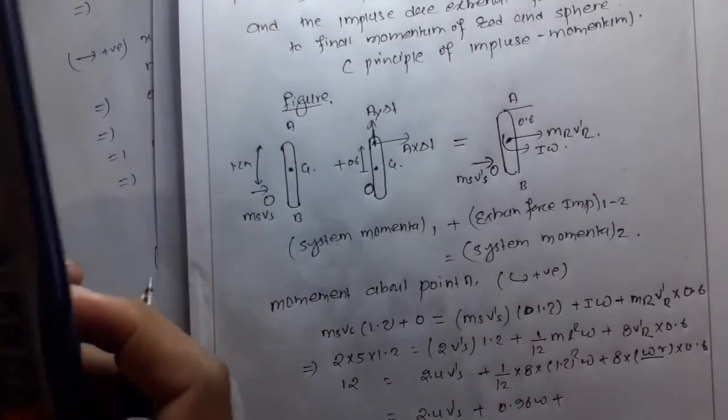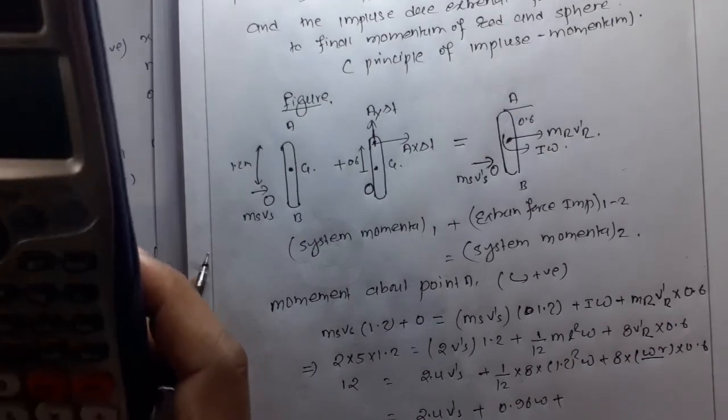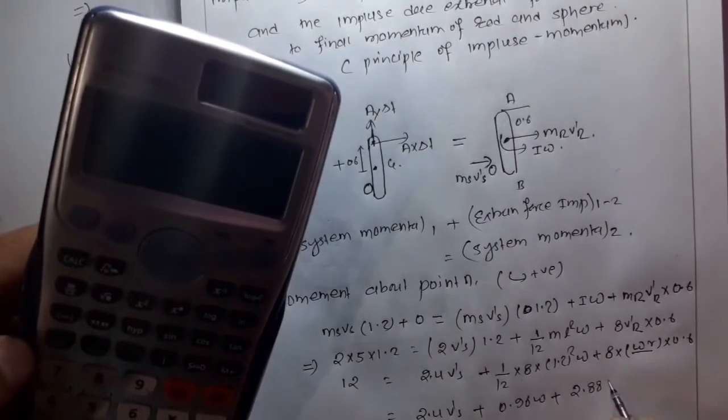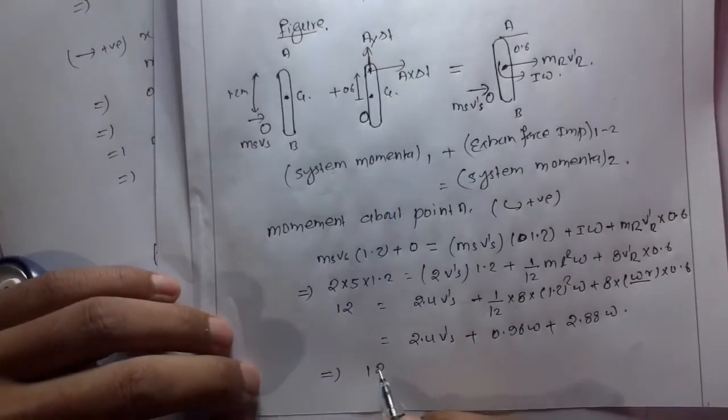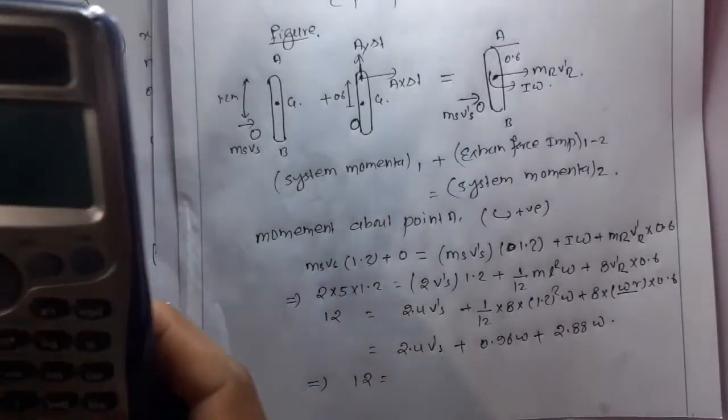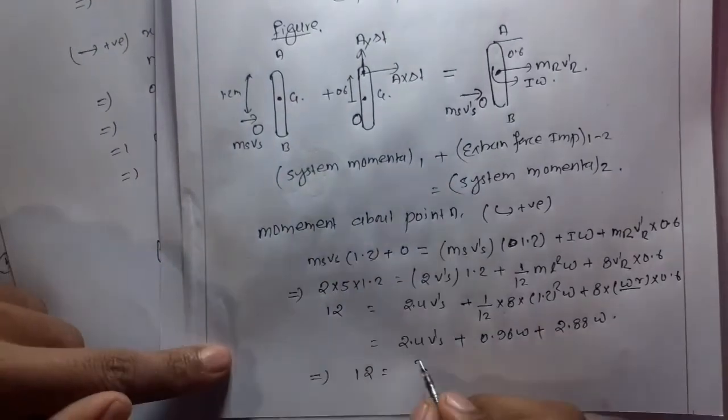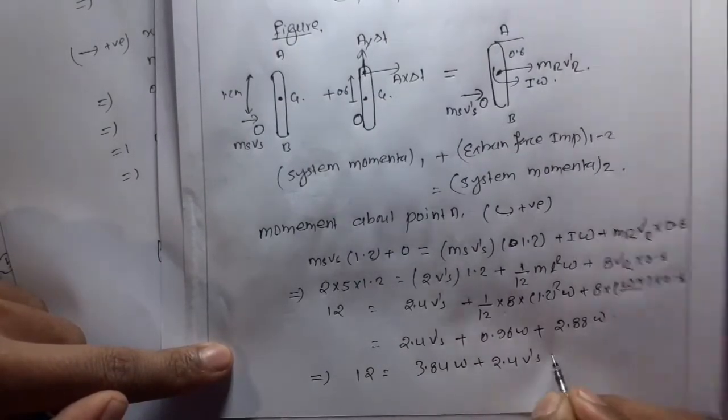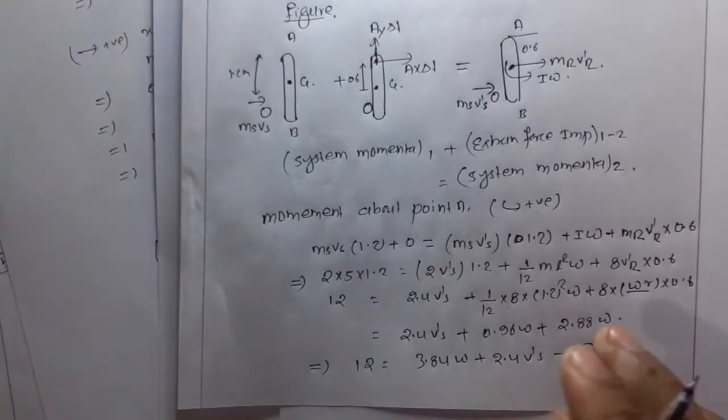This implies 12 equals 0.96 plus 2.88, which is 3.84·omega plus 2.4v'_s. So we get equation number 1: 12 = 3.84·omega + 2.4v'_s.